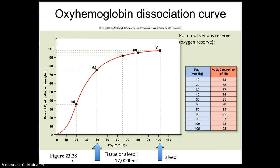The oxygen-hemoglobin dissociation curve shows oxygen loading. At the alveoli, loading is close to 100%, meaning nearly all hemoglobin is saturated with oxygen. At points like C and D on the curve — representing normal altitude tissue levels — approximately 90% oxygen loading is still achieved under normal conditions. This will be reviewed again in the next video.